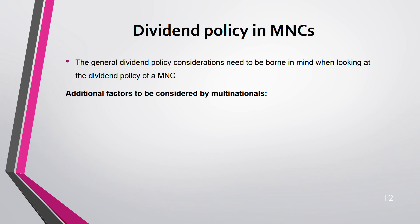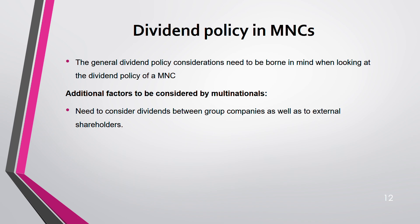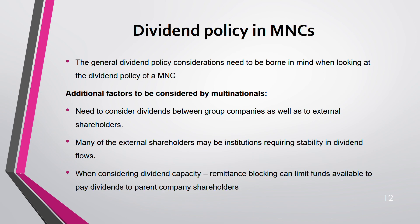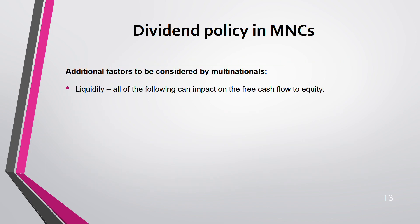But MNCs have some additional factors to consider. They need to consider dividends between group companies as well as to external shareholders. Many external shareholders may be institutions that require stability in dividend flows. When considering dividend capacity for MNCs, remittance blocking can limit funds — if you are not allowed to remit back what you earned in a subsidiary to the parent company, it limits what you can pay as a dividend.